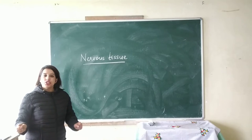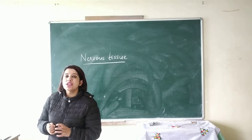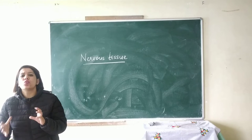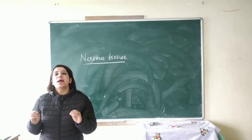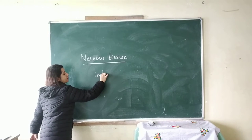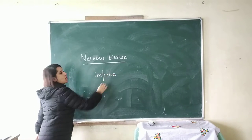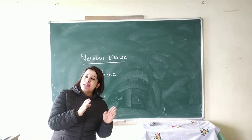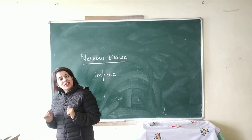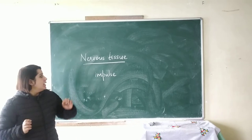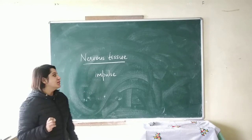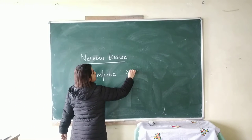The nervous tissue helps in coordinating our body. It carries messages, which are known as impulse, from the various organs to the brain, and impulse from the brain back to the various organs. The nervous tissue is composed of special types of cells known as neurons.